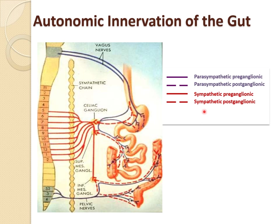The parasympathetic innervation is made up of cranial and sacral divisions. The cranial parasympathetic fibers originate in the medulla and travel through the vagus nerve to supply the esophagus, stomach, small intestine, pancreas, and the first half of the large intestine. The sacral fibers originate in the sacral spinal cord, pass through the pelvic nerves to the hypogastric ganglion as post-ganglionic fibers, and supply the distal half of the large intestine and rectum.